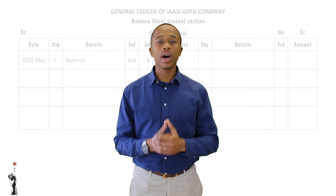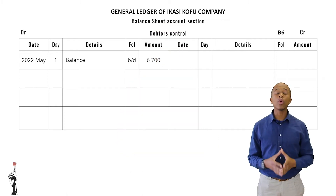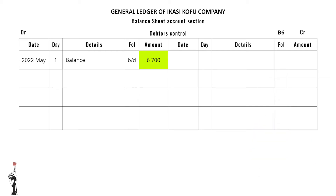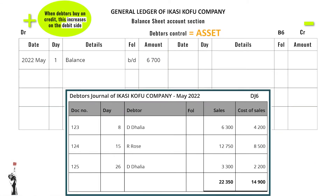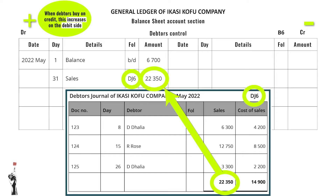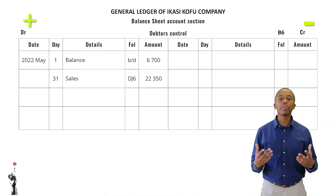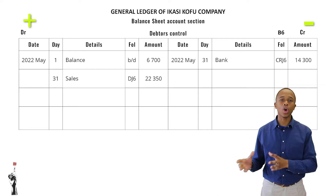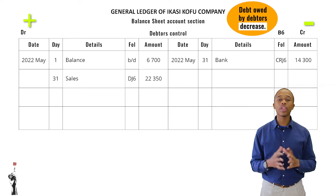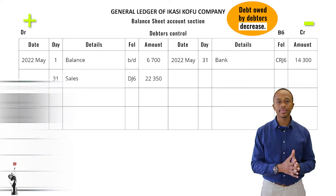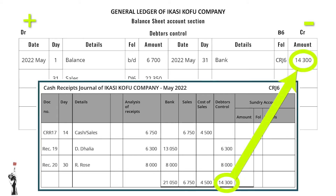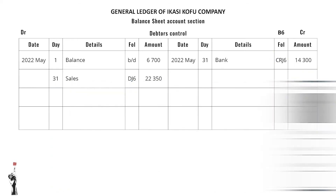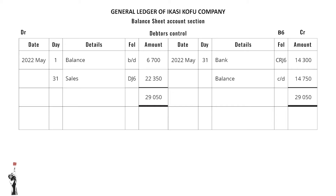The next account we'll be looking at is debtors control. We have already recorded the balance at the beginning of the month. When debtors buy on credit, this increases on the debit side of the debtors control T-account. This amount of R22,350 will be found in the debtors journal or DJ. At some point our debtors need to pay us back, so that will be recorded on the credit side of the T-account, as the debt they owe us decreases. Thus, the R14,300 will be found in the CRJ, the cash receipts journal. Remember to balance the account at the end of the month.